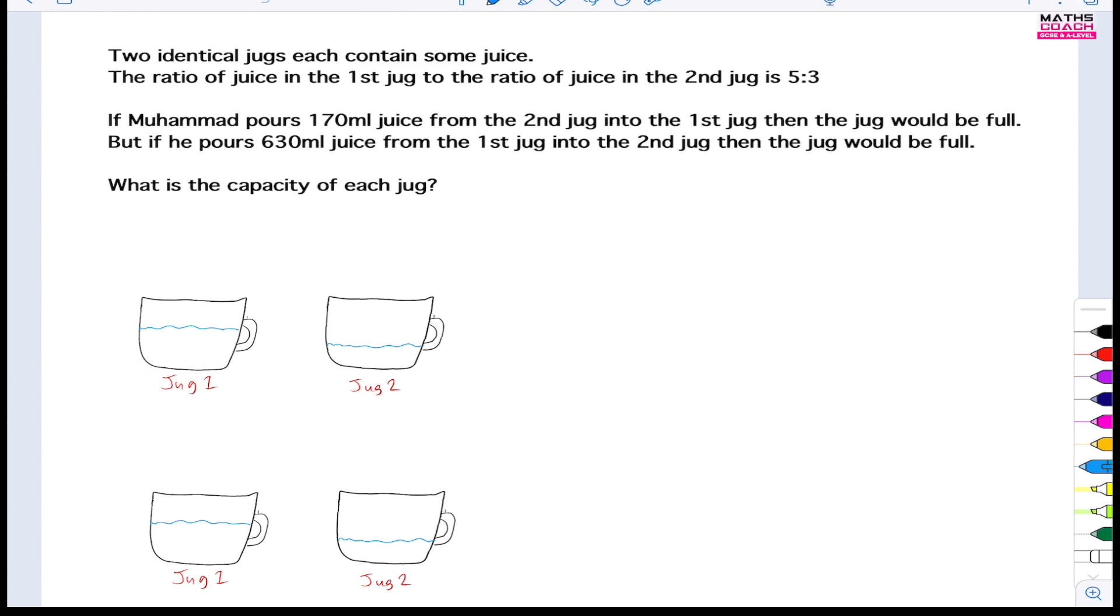We'll look at this drawing part in a second. Let's go ahead and highlight the question. So first of all, what's my mission? My mission is to find the capacity of each jug. That's what I want to know. And because both jugs are identical, I just need to work out the capacity of one of them and it will be the capacity of both. I know that I have two identical jugs, each containing some juice.